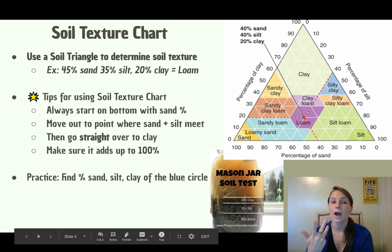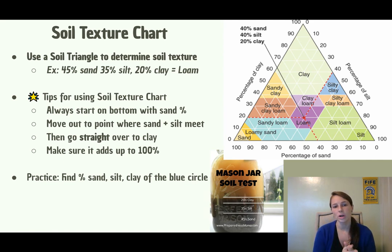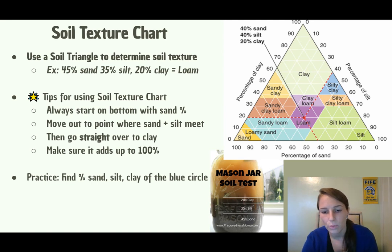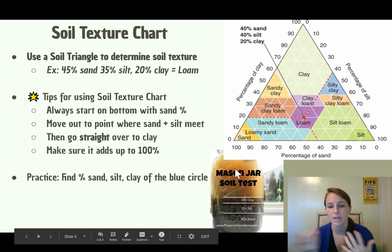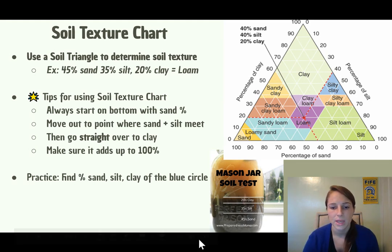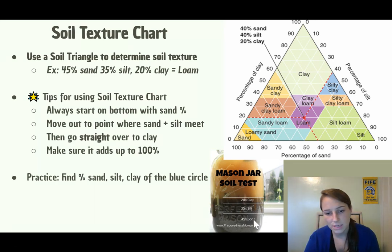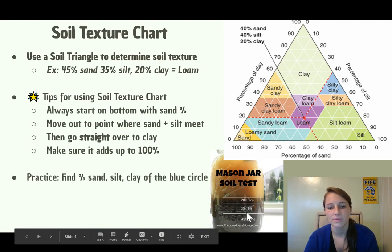I'm going to show you how to determine soil texture using something called a soil texture chart, also called a soil triangle. For example, if we take a Mason jar, mix it with water and soil, and let it settle overnight, you'd actually be able to see three distinct layers of clay, silt, and sand. For this particular example, 45% is sand, 35% is silt, and 20% is clay.